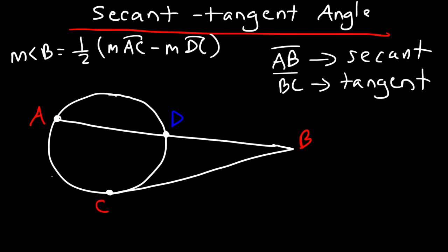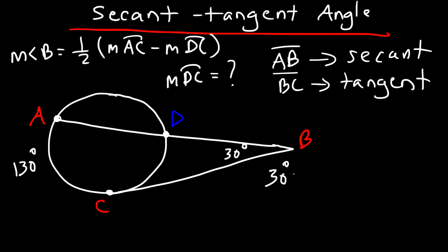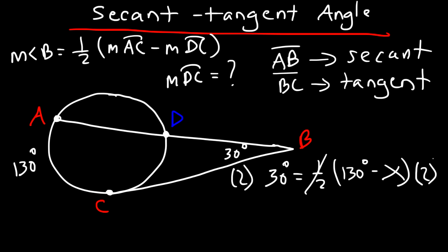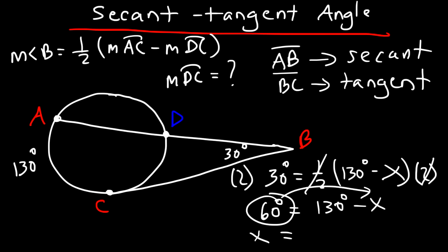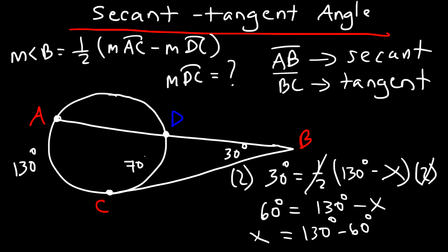For example, if arc AC = 130 degrees and angle B = 30 degrees, find arc DC. Using the formula: 30 = one-half of (130 − X). Multiplying both sides by 2: 60 = 130 − X, so X = 70 degrees. The measure of arc DC is 70 degrees.